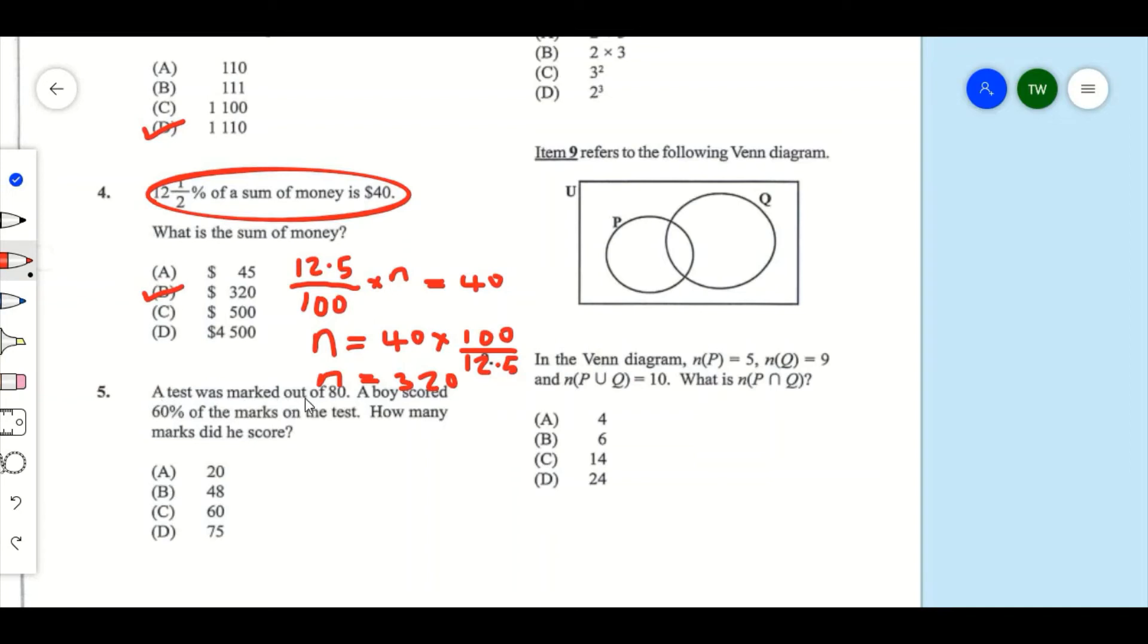Question 5: A test was marked out of 80. A boy scored 60% of the marks on the test. How many marks did he score? If he scores 60%, that's 60/100 times 80. Cancel out zeros here and here, and what we're left with is 6 × 8, which gives us 48. So our answer for number 5 is B.